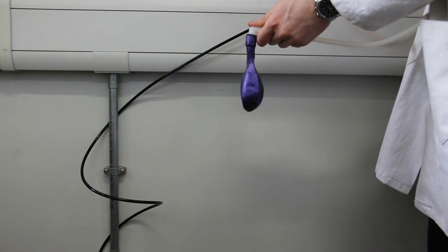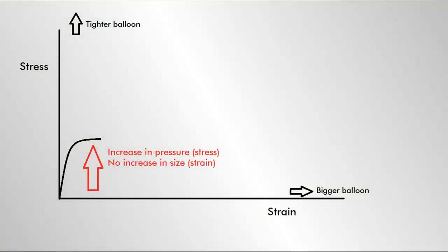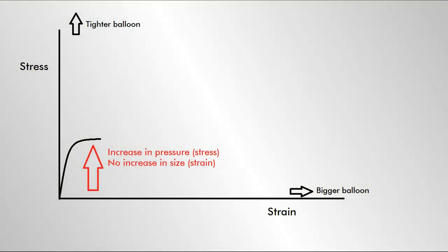At first, the balloon fills with air and builds up a bit of pressure to overcome the initial stiffness before it starts to inflate. The graph shows this as an increase in stress due to the pressure, but only a little increase in strain as the balloon doesn't inflate by much.